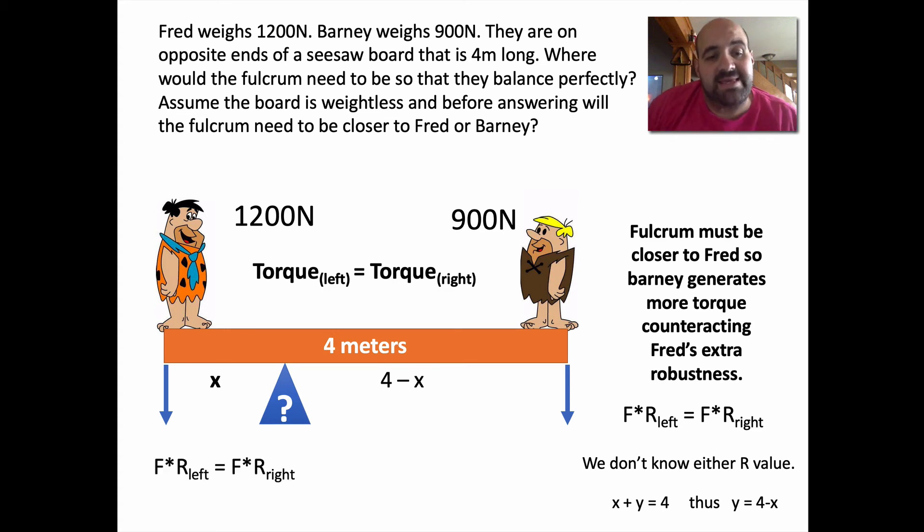Force times distance on the left equals force times distance on the right. We know that we have 1200 times X and that's going to equal 900 times four minus X. So the main trick of this problem is defining Barney's distance as Y from Fulcrum and Fred's and then basically coming up with a little equation that we can substitute back in to get rid of one unknown. Once we get here, this should be straightforward.